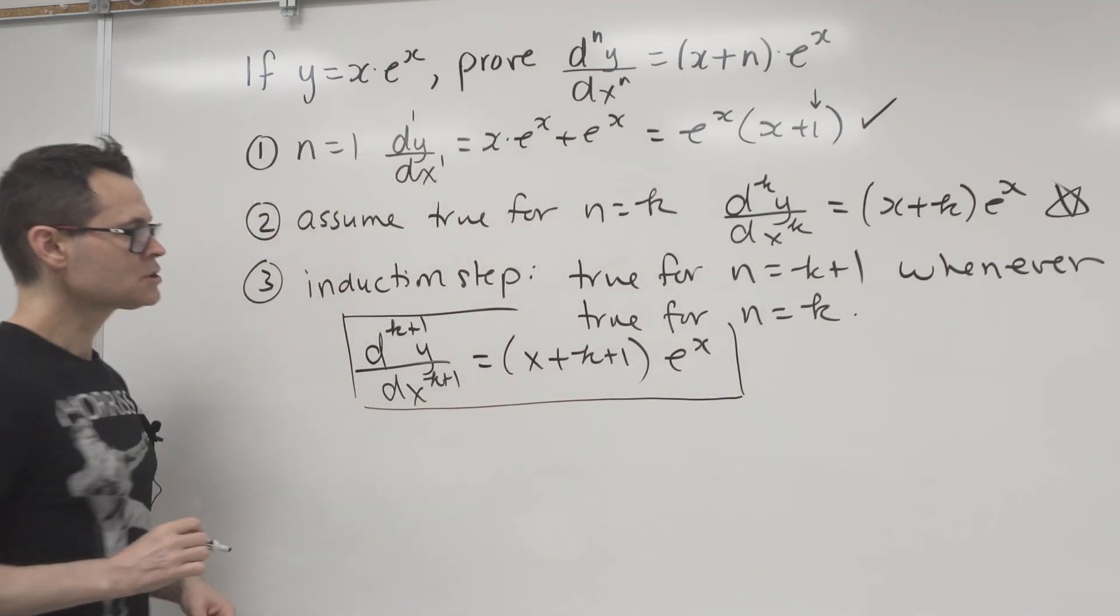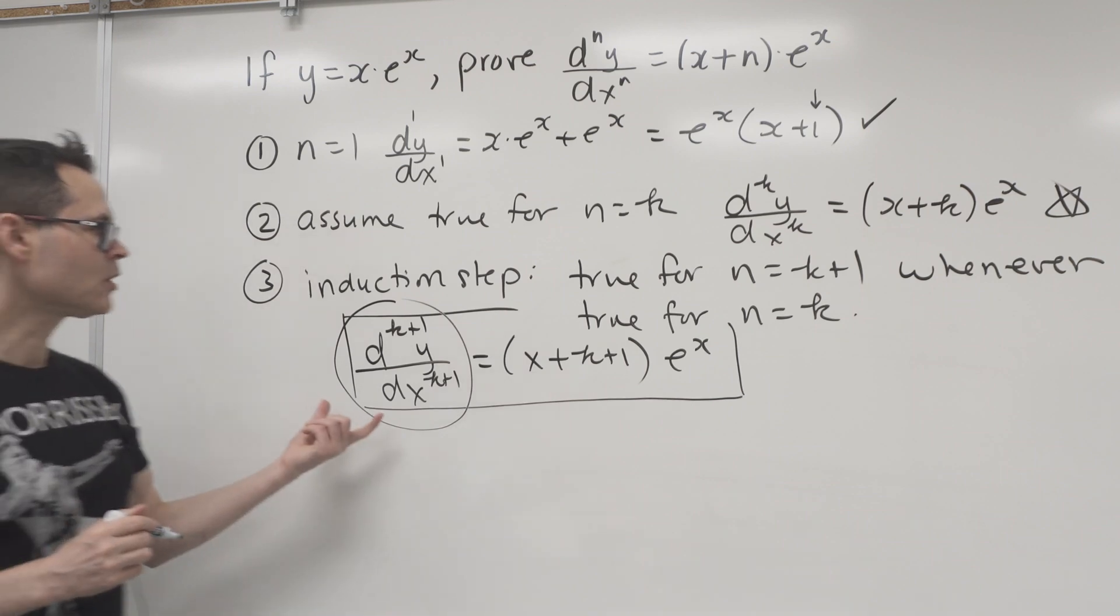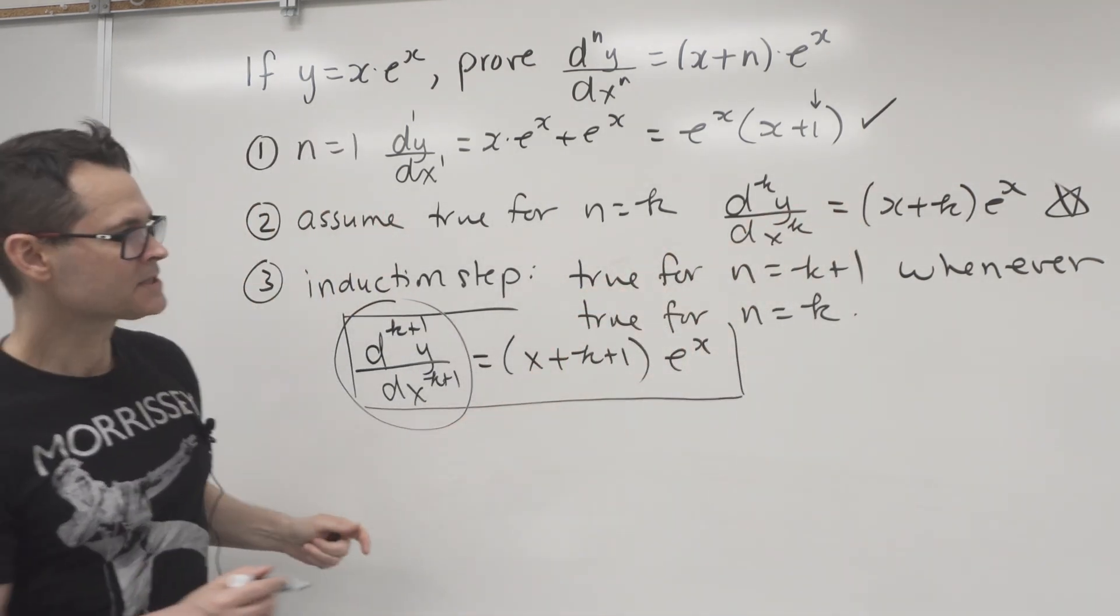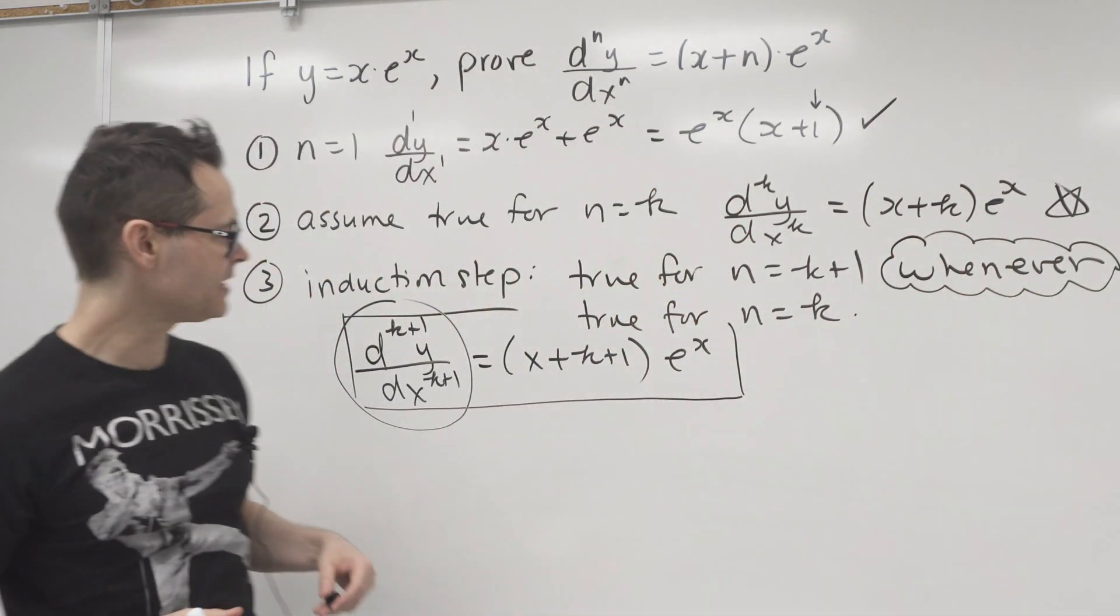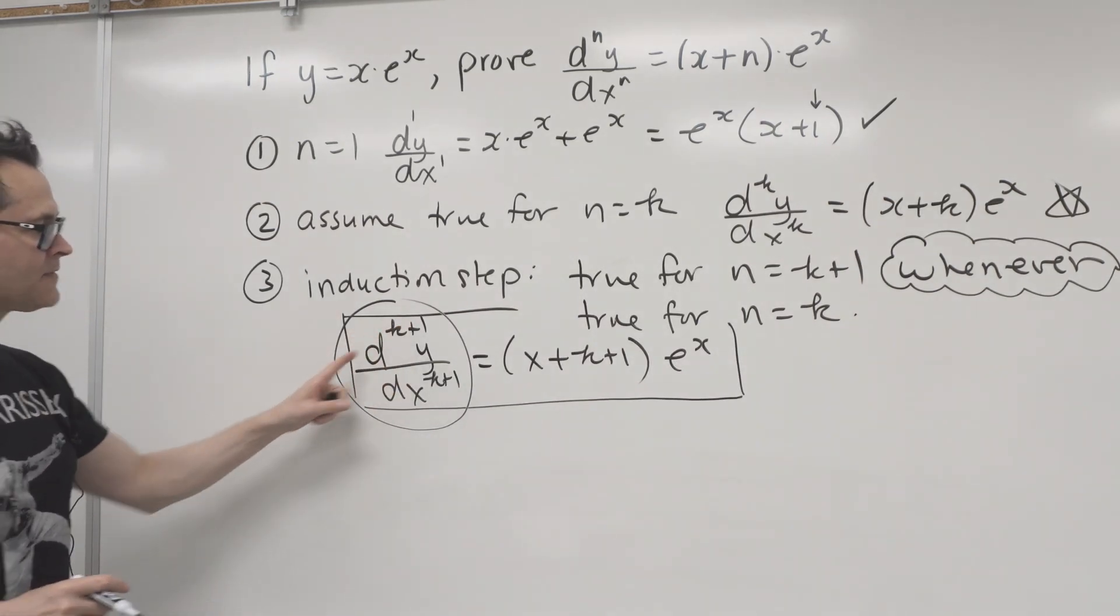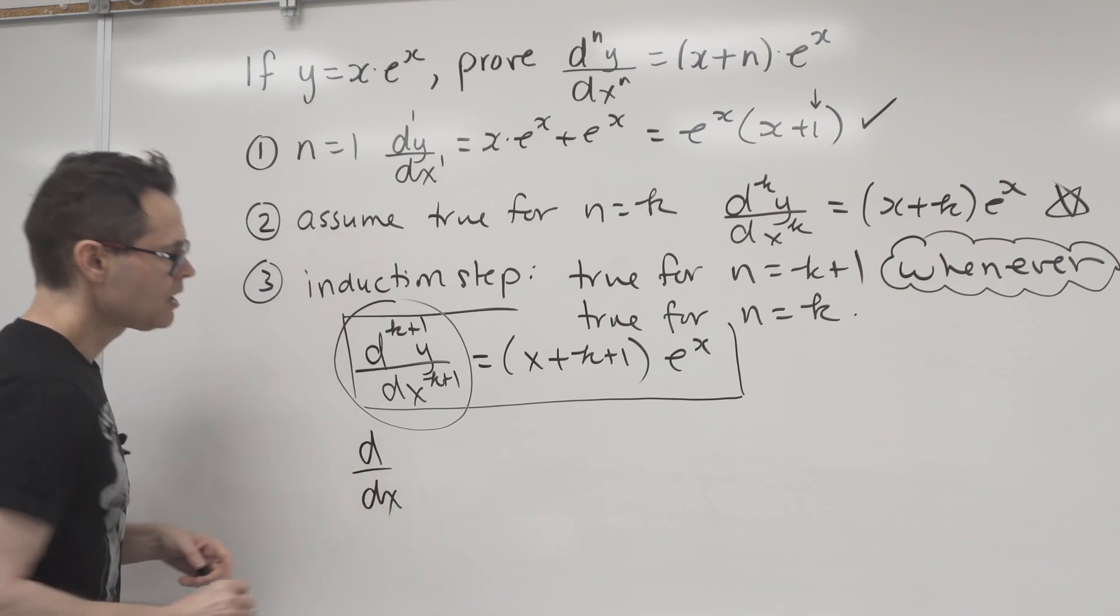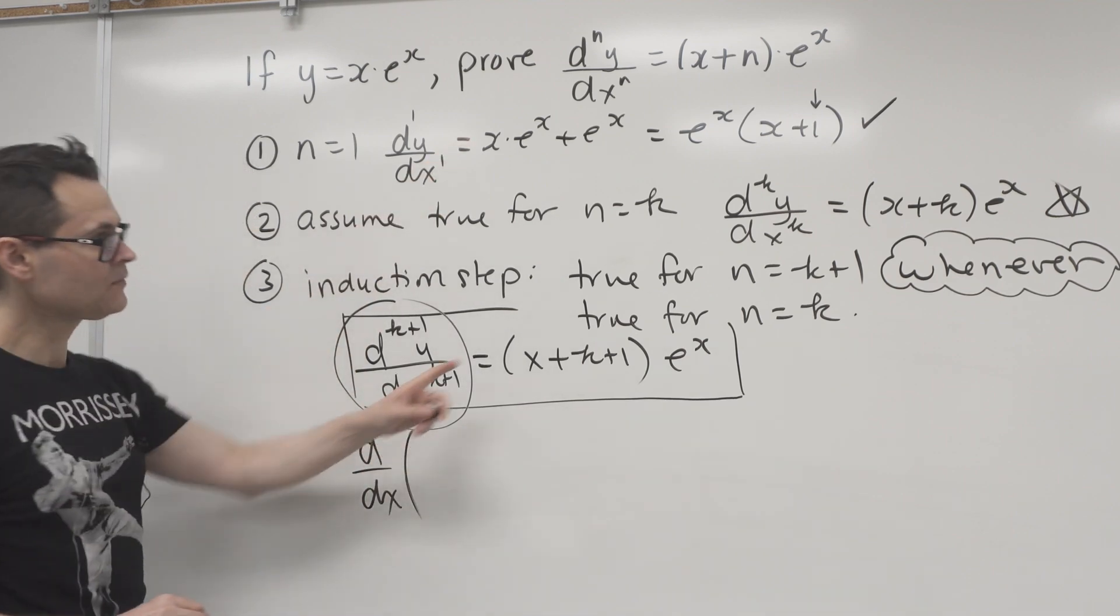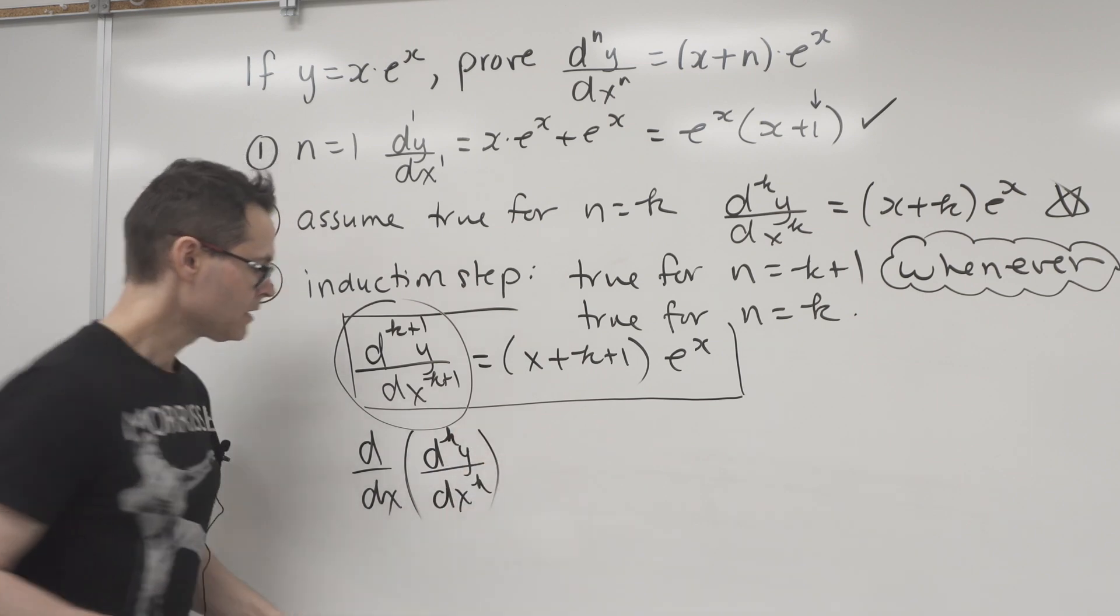All right. So what I can do is I can take the left-hand side right here, and I can start working with it in conjunction with my assumption step, because that allows me to get this whenever built in. The whenever is a really important part of induction. So of course, if this is the k plus 1th derivative, I know that can be generated by taking the derivative of the k-th derivative. So the k-th derivative, dky dx k. Okay, that's the k-th derivative.